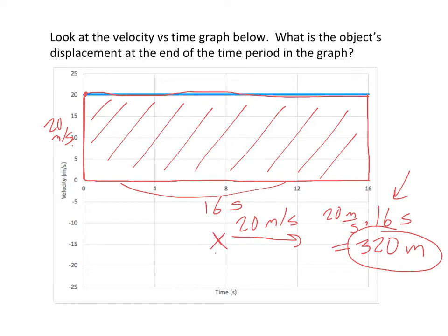If the object began at called the zero, it'll be 320 meters away in 16 seconds. If we figured out at eight seconds where it was, it would be eight times 20, be 160 meters away at eight seconds. But we're looking at the full graph, we want to know how far away it is at 16 seconds. So that is how we find displacement from a velocity versus time graph.